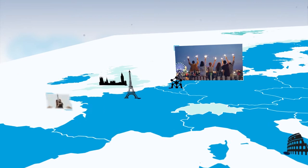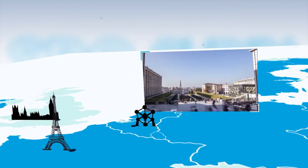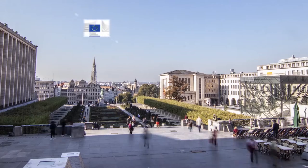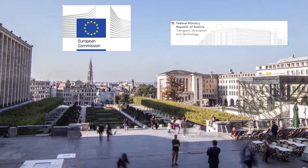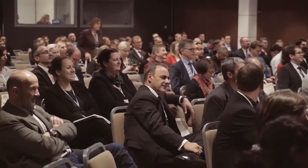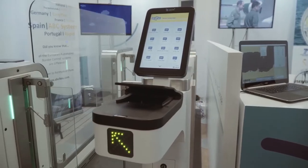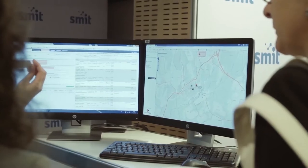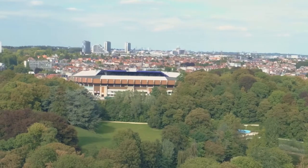Taking place in the heart of Brussels, the 2018 Security Research Event, jointly organized by the European Commission and the Austrian Ministry for Transport, Innovation and Technology, will demonstrate the strength and inspiring results of security-related research and innovation that contribute to making Europe a safer place.